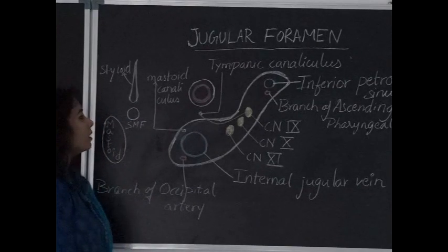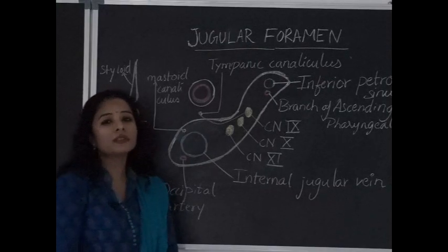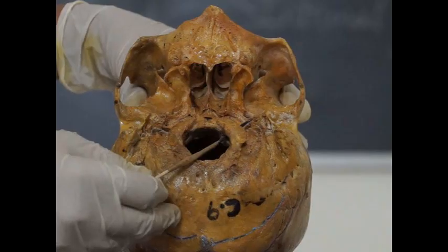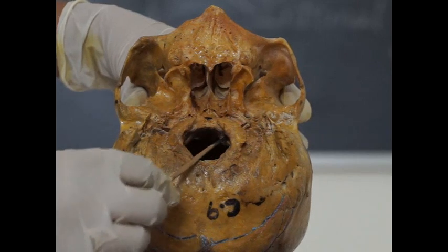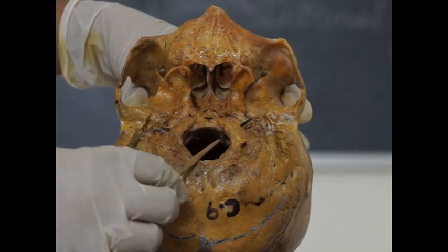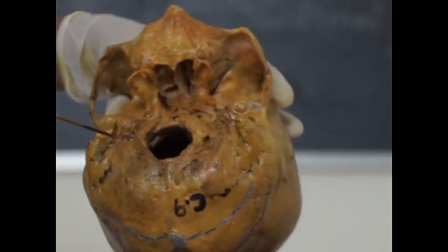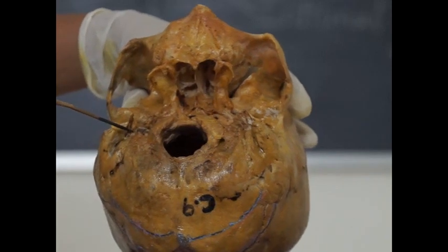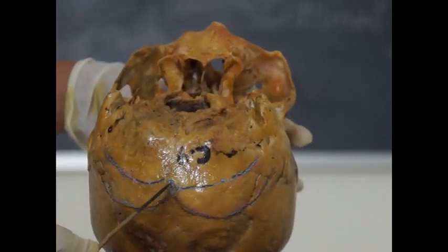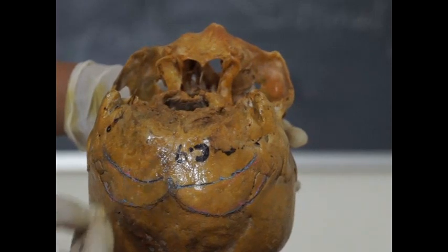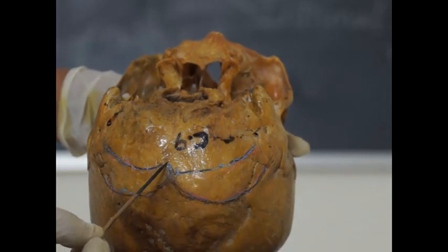Structures passing through hypoglossal canal is mainly hypoglossal nerve and structures passing through stylomastoid foramen facial nerve and structures attached to the external occipital protuberance and crest is ligamentum nuchae.